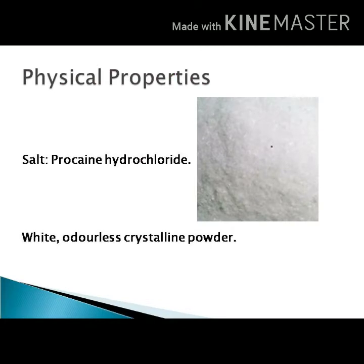Coming to the physical properties of procaine: procaine is used as its salt form — procaine hydrochloride — since it contains a nitrogen atom, making it a base that reacts with acids to form a salt. Procaine hydrochloride is a white, colorless, odorless, crystalline powder.